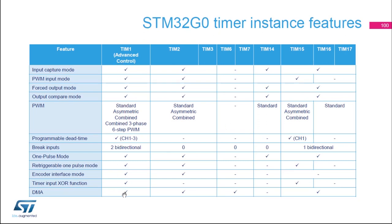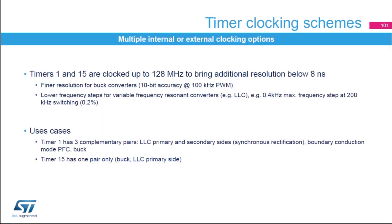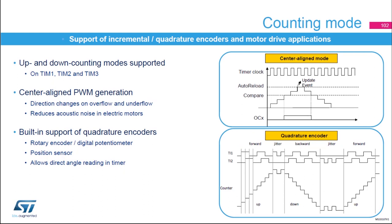Timer 1 is the advanced timer with all the different listed features. For Timer 2 we are going to use standard PWM mode, though multiple other PWM modes are also supported. Regarding timer clocking, Timer 1 and Timer 15 can be clocked up to 128 MHz, giving additional resolution below 8 nanoseconds — useful for buck converters to get fine resolution and lower frequency steps. Timer 1's three complementary outputs suit synchronous rectification, while Timer 15 with one pair suits buck and LLC primary side. Up, down, and center-aligned PWM counting modes are all supported.